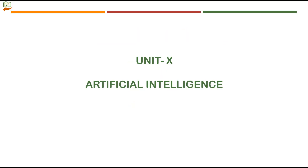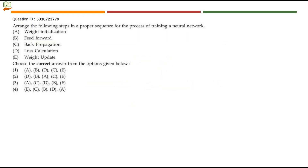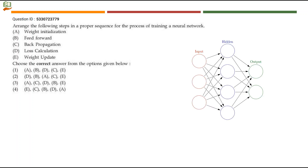Let's solve unit 10 artificial intelligence questions. Arrange the following steps in a proper sequence for the process of training a neural network. We have seen about neural networks in previous year question papers. For this question I'll just give you a diagram. We have an input layer first, and this input layer will have weights for every neuron. This part can be equated to weight initialization.